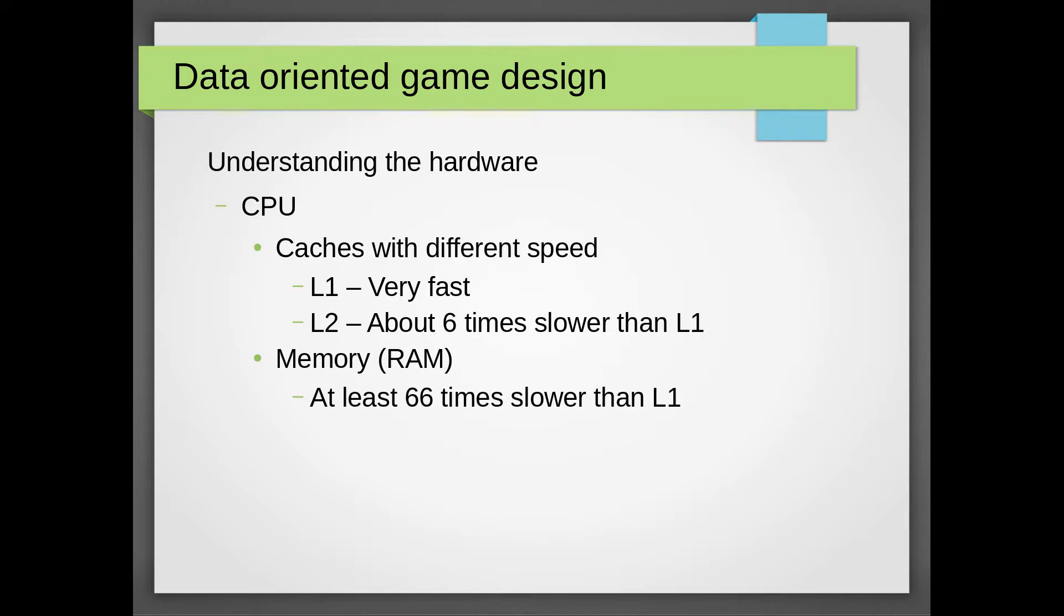An important aspect to understand when it comes to performance is that the CPU has a set of different caches that it can get data from much quicker than from your main RAM memory. These caches are of varying size and speed. The smaller ones are faster and then they grow larger and slower.